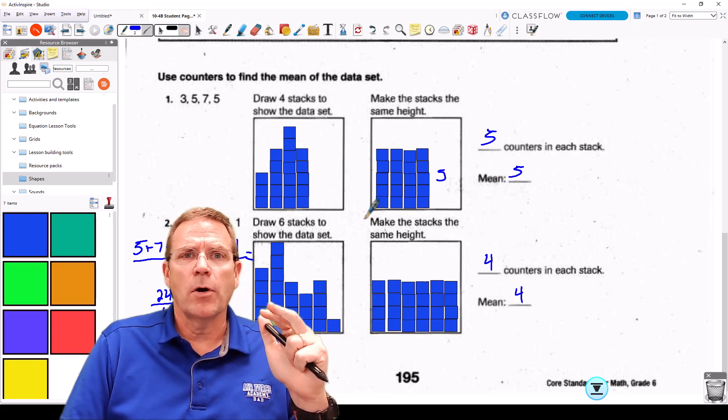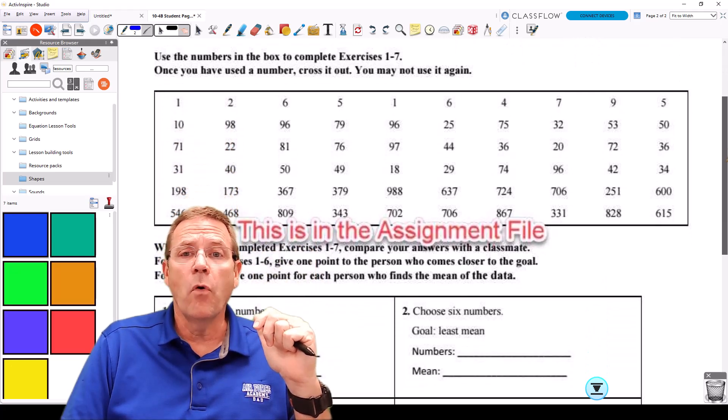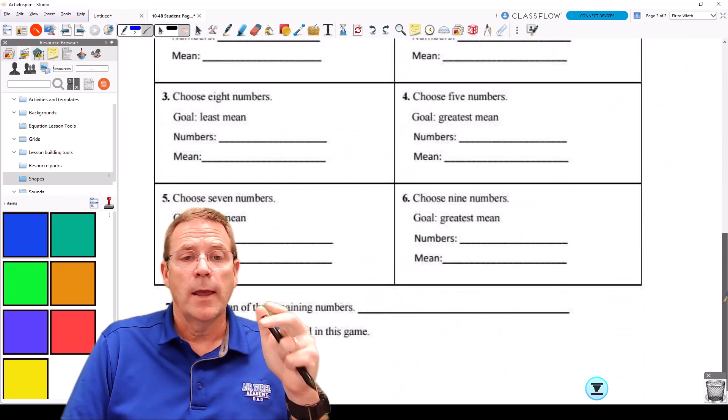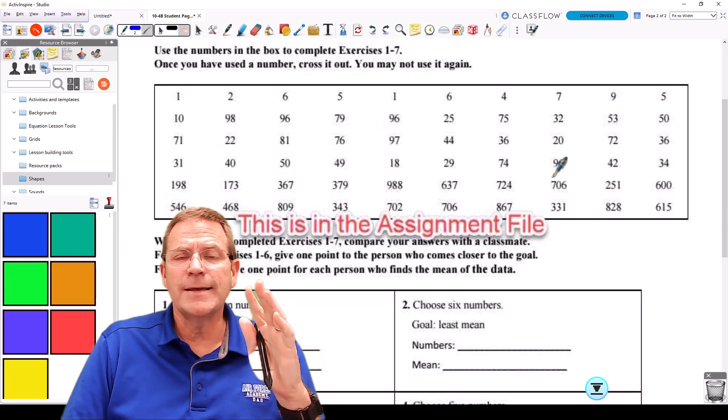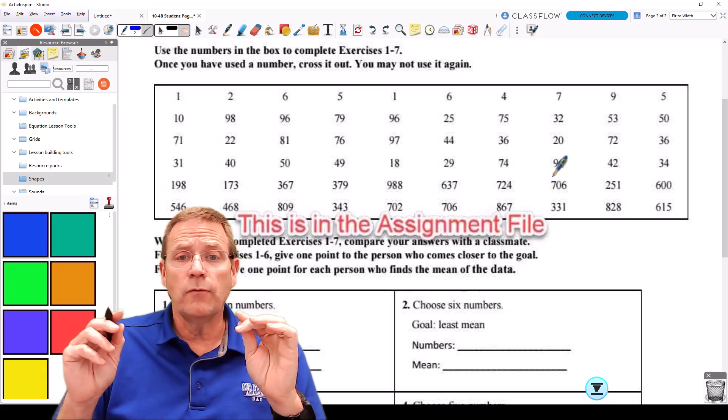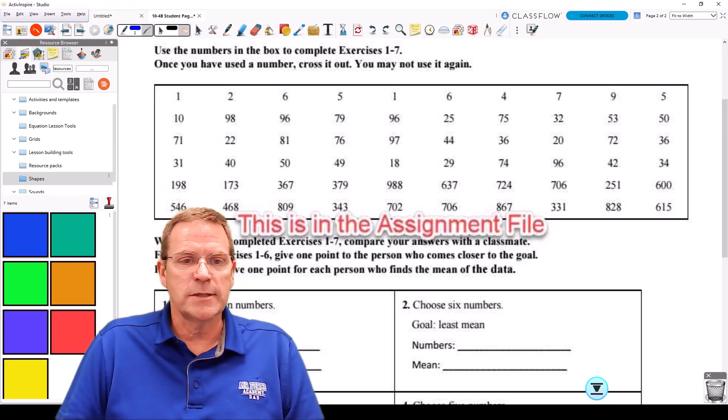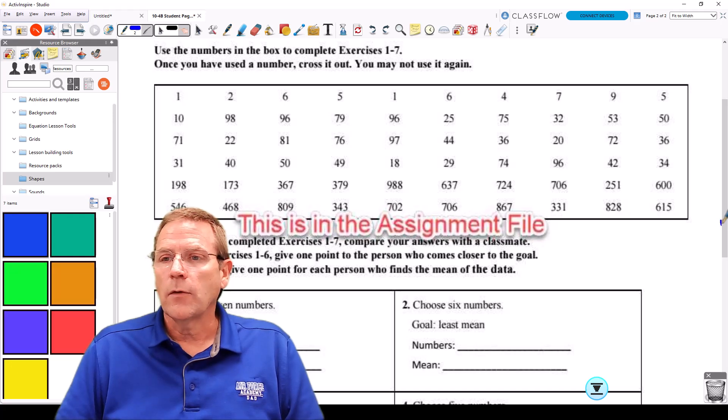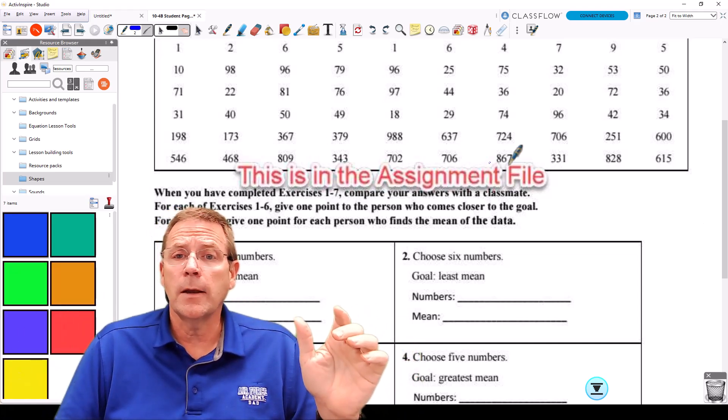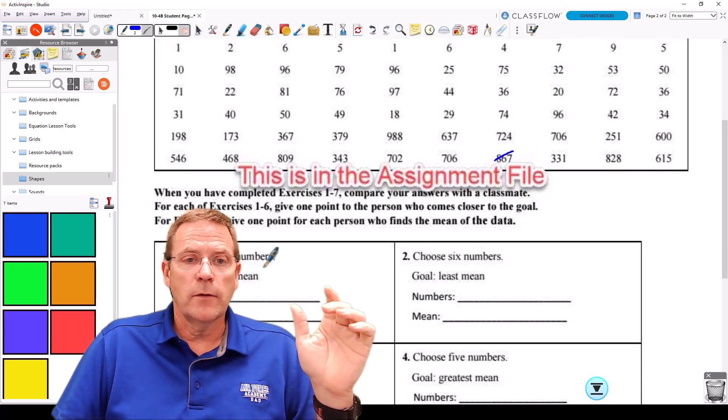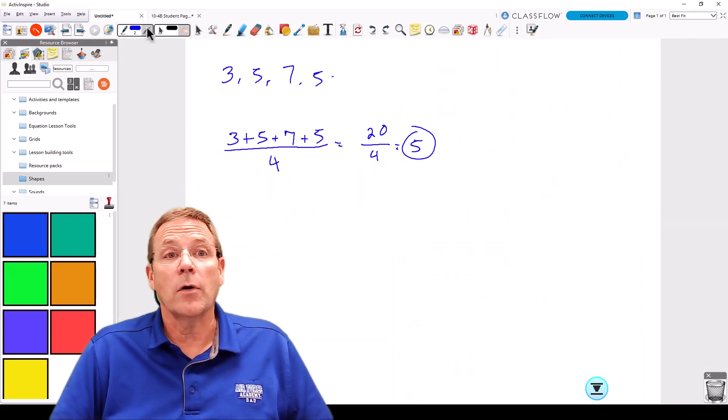That's it for the main lesson part of the day. Let's discuss what you're going to have to do for your homework because this is pretty significant. They give you a box full of numbers and they give you six problems you have to work. And then they're going to give you two additional things you have to answer. So you're going to take and use the numbers in this data set that they give you. And once you have used the number, you can't use it again. For example, for the first problem, it says they want you to choose seven numbers with a goal of the greatest mean. So I'm going to pick the seven biggest numbers that I can see here. But once I pick them, they're gone from the pile. I can't pick them again.